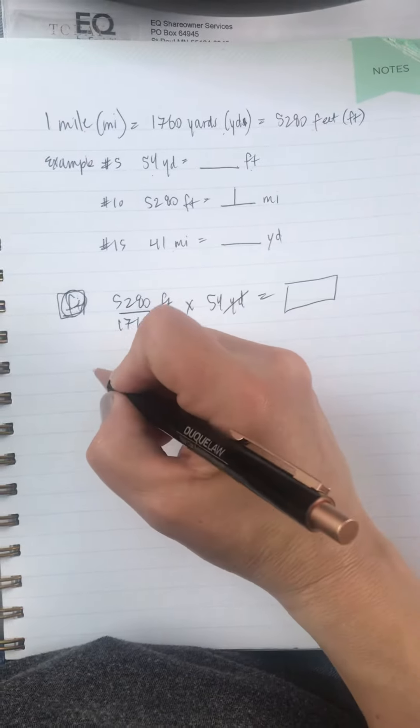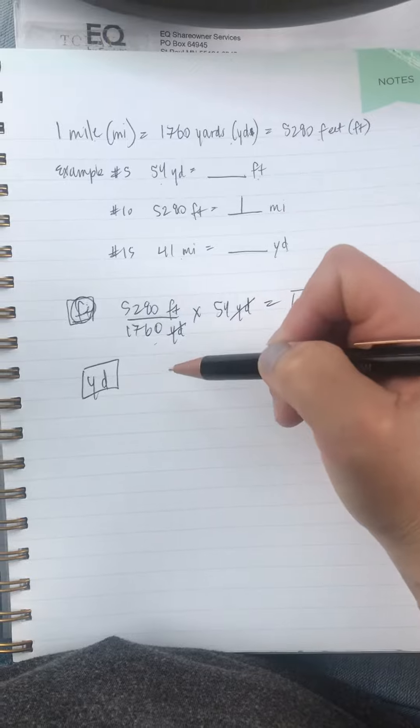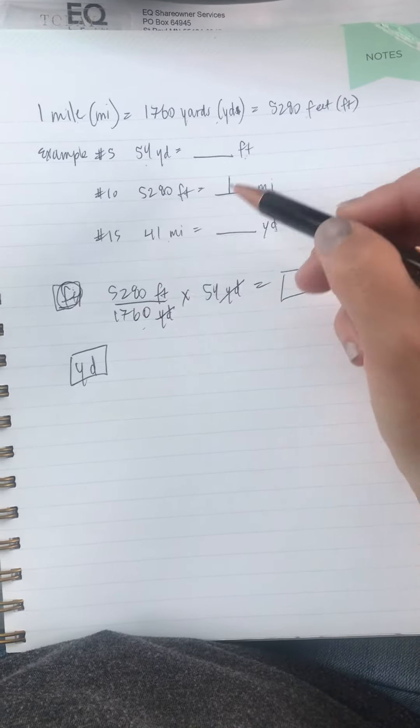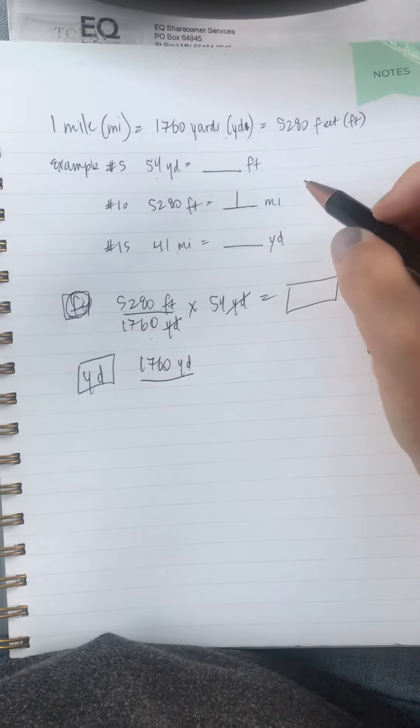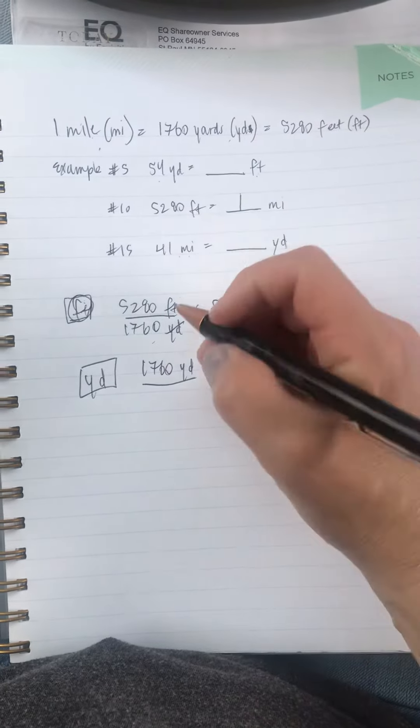But the same thing over here. I want yards. So I write that down here. That's my goal. That means that the yard to miles has to be on the top, right? The yard has to be on the numerator. So then looking up here, 1760. And then I'm going to miles. Yes. So one mile.